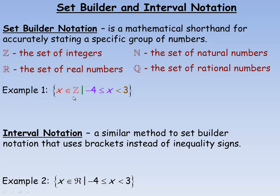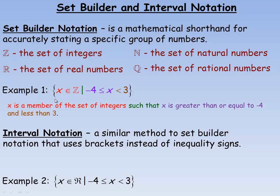An example of set builder notation looks like this — it's inside squiggly brackets. The Greek letter epsilon stands for 'is a member of' or 'is contained in.' So the first part reads: X is a member of the set of integers. The vertical line stands for the words 'such that.'